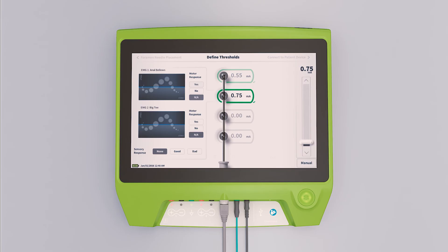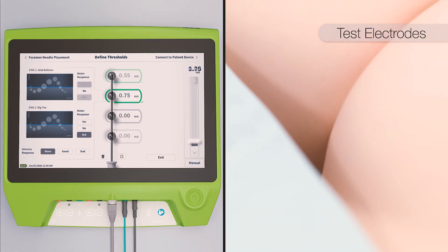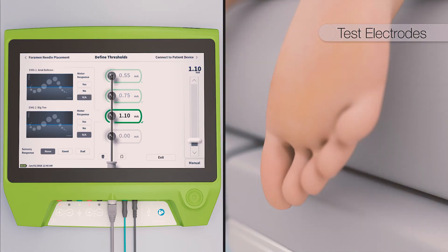The goal is to obtain the desired motor response, bellows, followed by big toe flexion on all four electrodes at thresholds of two milliamps or less.